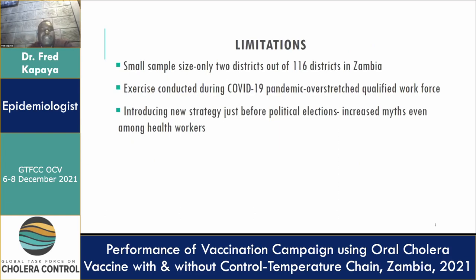Regarding limitations: the small sample size — only two districts out of 116 — is one limitation. Additionally, the study was conducted during the height of the COVID-19 pandemic, which overstretched the qualified workforce as they also had to attend to COVID-19 cases. The study also took place just before political elections, which increased myths and misconceptions even among health workers, with some believing we were targeting particular political groups with new interventions.